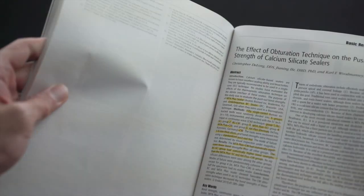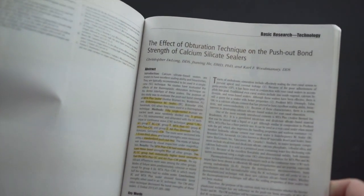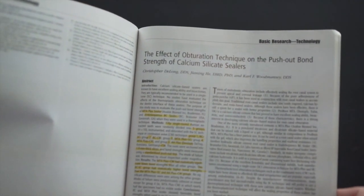The first one is the effect of obturation techniques on the push bond strength of calcium silicate sealers. And that is by Christopher DeLong et al., and that's from Baylor University.